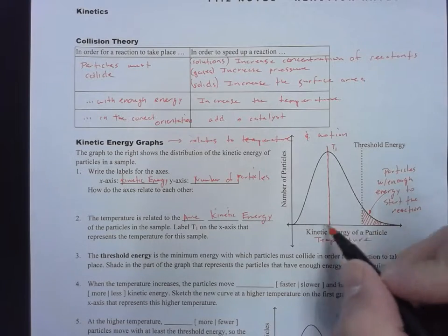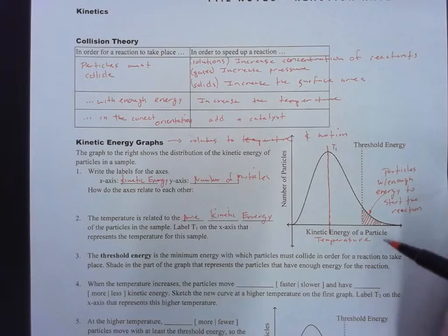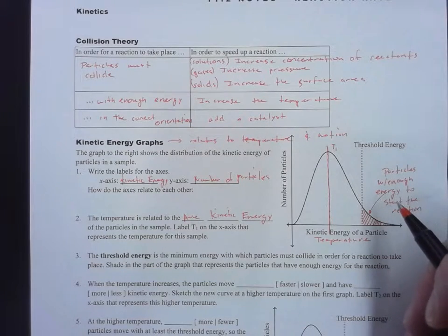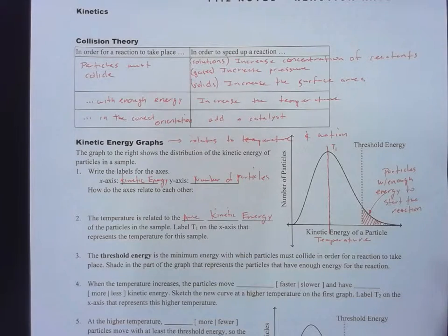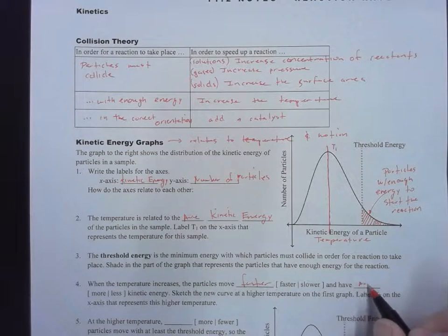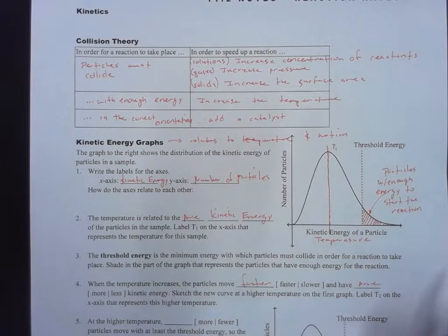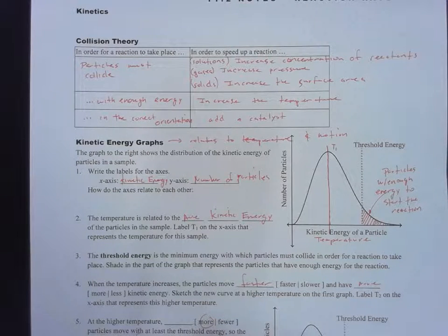Notice you don't need all of the particles to start the reaction — you might only need a small amount, but they have to cross that threshold energy first. When the temperature increases, particles move faster and have more kinetic energy. At a higher temperature, more particles move with at least the threshold energy, so the reaction will go faster than at the lower temperature.